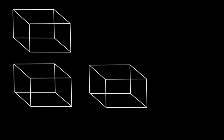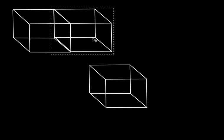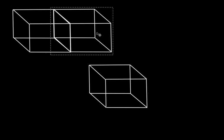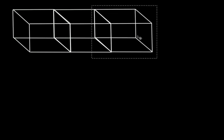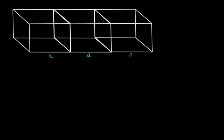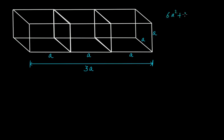Similarly, if we join three cubes together, the new length is 3a, height is a, and breadth is a. The total surface area will not be 6a² + 6a² + 6a² = 18a², because we have to account for the faces that are lost when the cubes are joined.